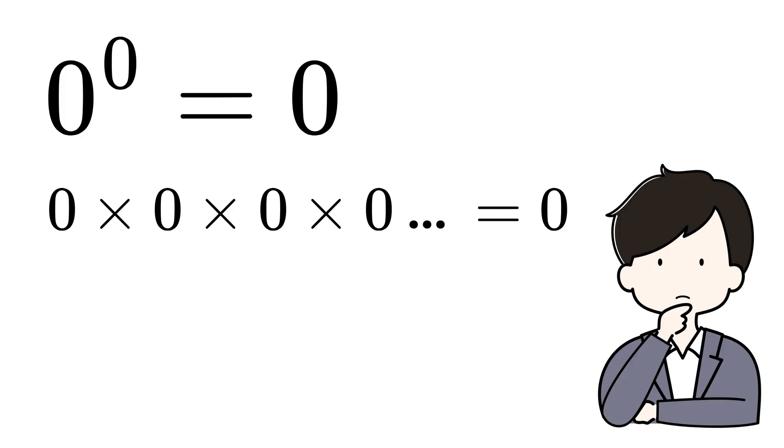Some people think zero raised to power zero is zero, because if we multiply zero with zero any number of times, the result must be zero. That's one side of the argument, and it sounds reasonable.